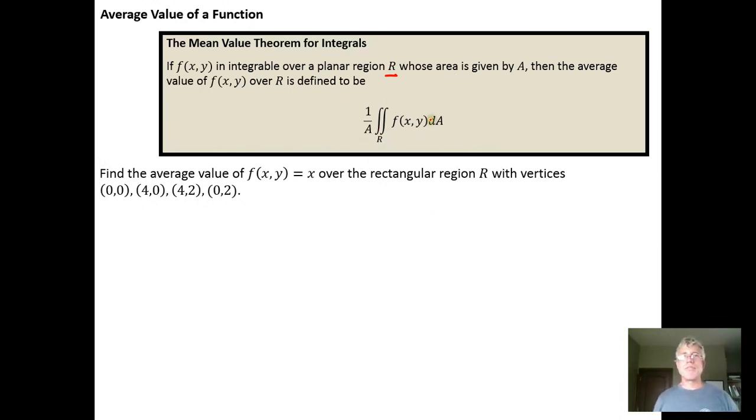The average value of a function is defined in three-dimensional space to be: take the double integral over your region, multiply the double integral by 1 over the area of the region over which you're integrating, and then you're doing f(x,y) times dA.